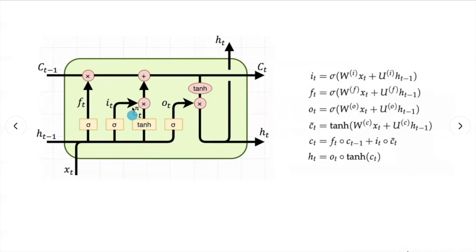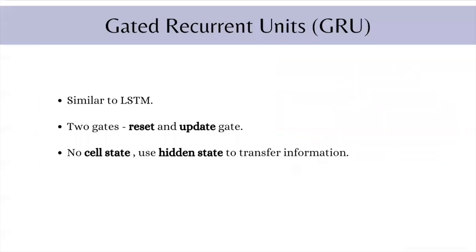Now that we understand LSTM, let's understand GRU — Gated Recurrent Units. GRU is very similar to LSTM; in fact, it simplifies LSTM with fewer parameters. The intuition behind GRU is the same as LSTM. There are two gates: the reset gate and the update gate. There is no cell state in GRU — GRU uses the hidden state to transfer information.